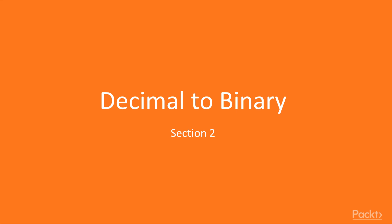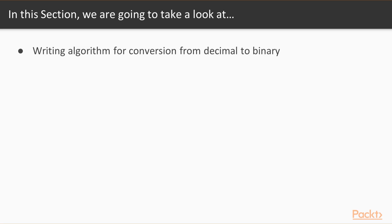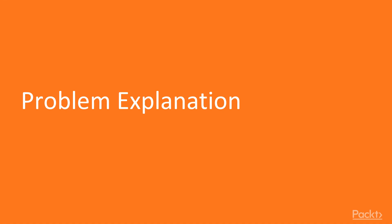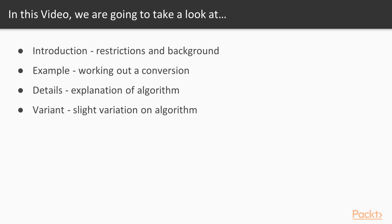In this video we will learn about the decimal to binary conversion. This will be our first algorithm that we will explain and later implement. Specifically, we want to write a conversion that will accept a decimal integer and convert it into a binary string representing the same number. We will first introduce the algorithm and its limitations, then work through a simple example, walk through the pseudocode, and finally present a slight variant of the same conversion.